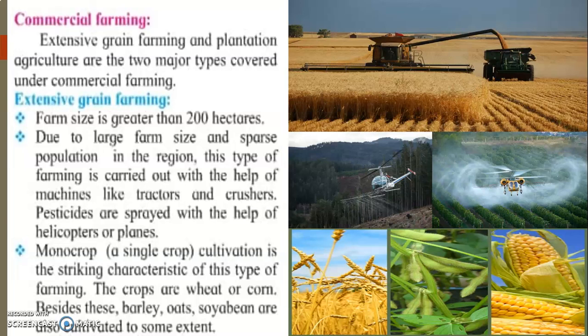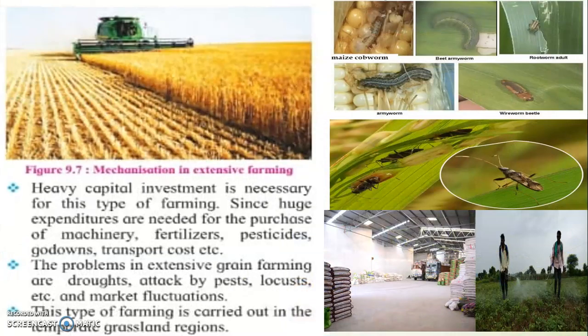In monocrop farming, a single crop is grown on hectares and hectares of land. You either grow wheat, corn, barley, oats, soya beans, or other grains. These are the main important characteristics of extensive grain farming, though there are other characteristics as well.